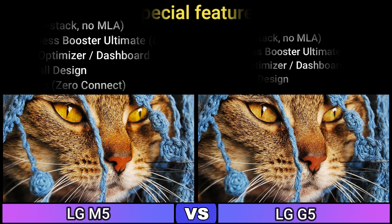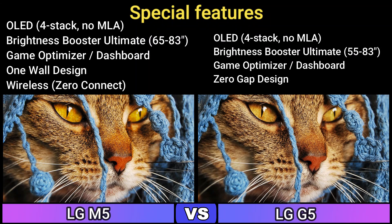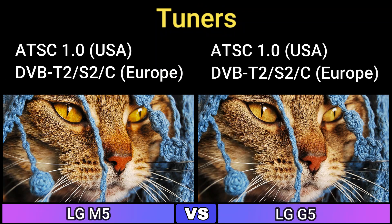Special features: OLED 4-Stack, Normal, Brightness Booster Ultimate (65–83 inch), Game Optimizer Dashboard, One Wall Design, Wireless Zero Connect. Also: OLED 4-Stack, Brightness Booster Ultimate (55–83 inch), Game Optimizer Dashboard, Zero Gap Design. Tuners: ATSC 1.0 (USA), DVB-T2/S2/C (Europe).